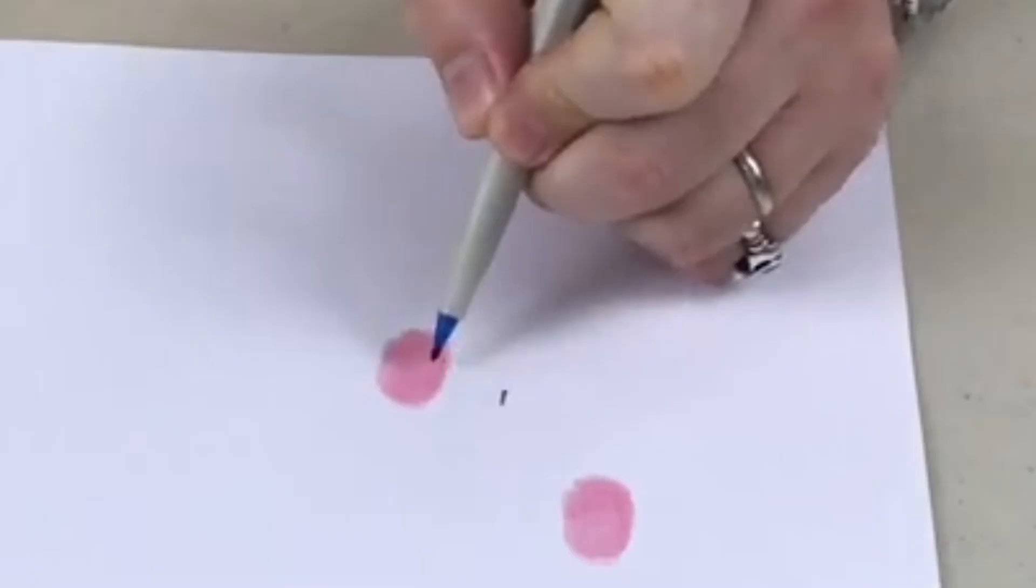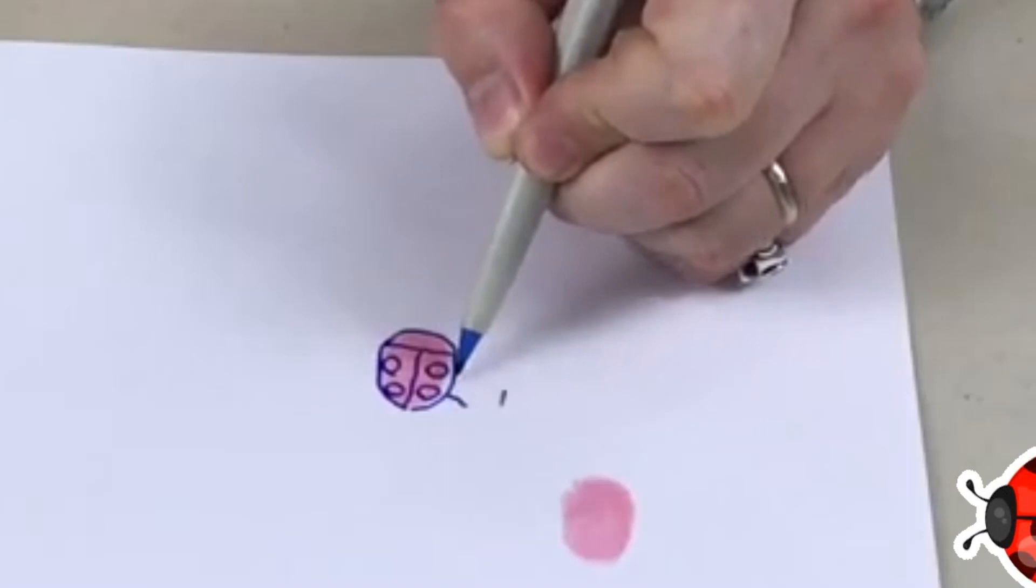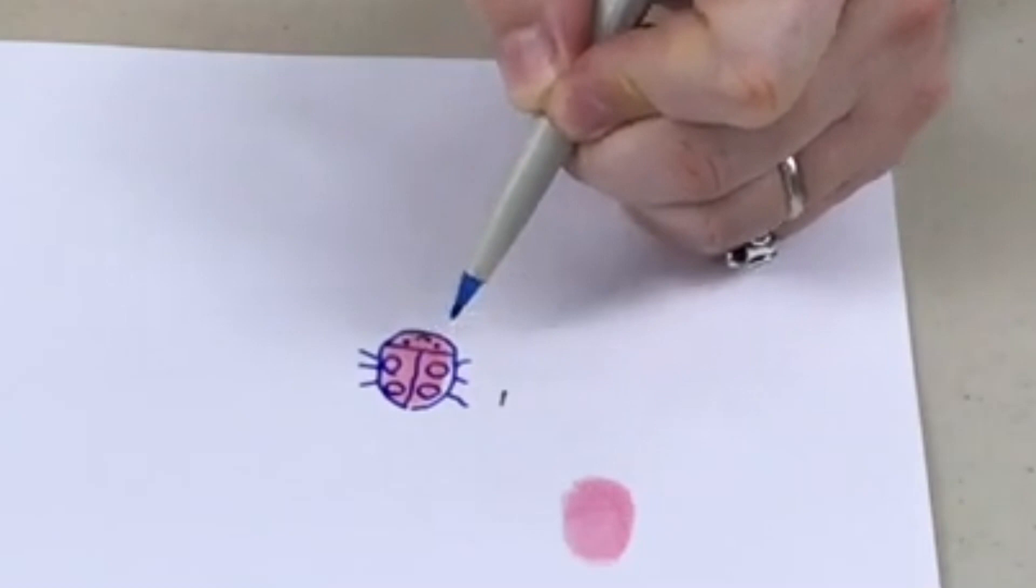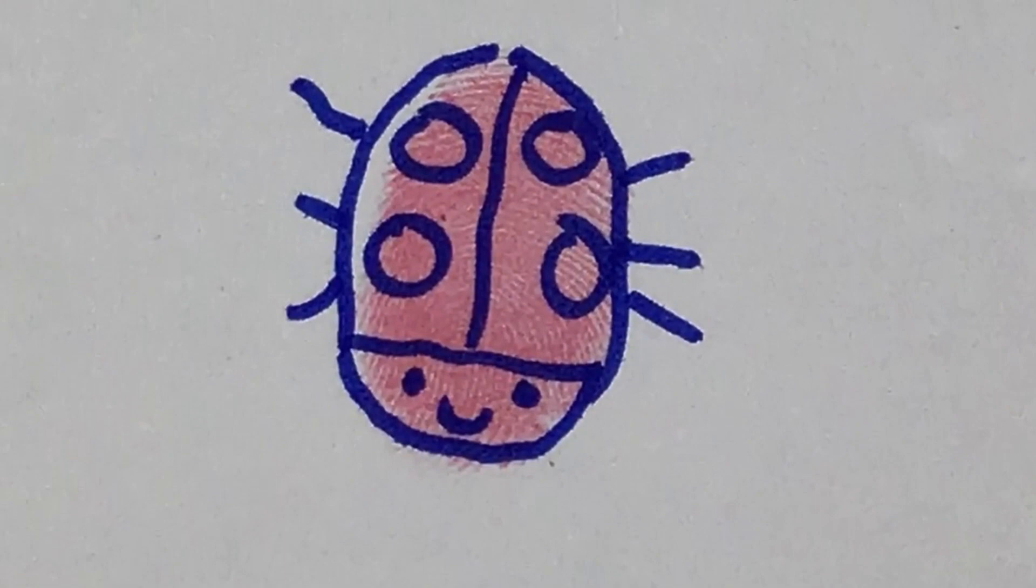Maybe a ladybug. I'm just going to outline it. Draw some spots. Six legs. Three legs on each side. Some antenna. And there's a ladybug. Looks cute.